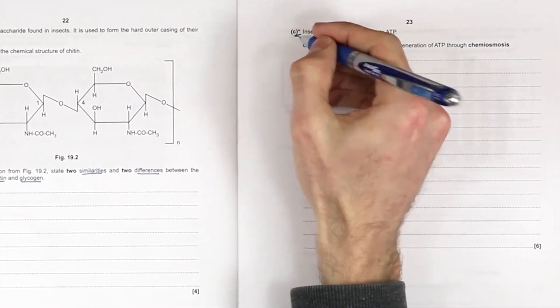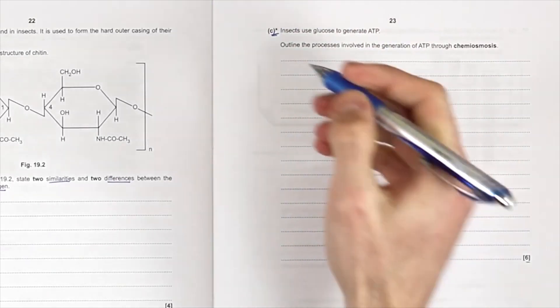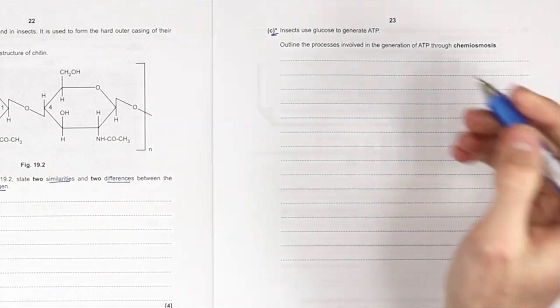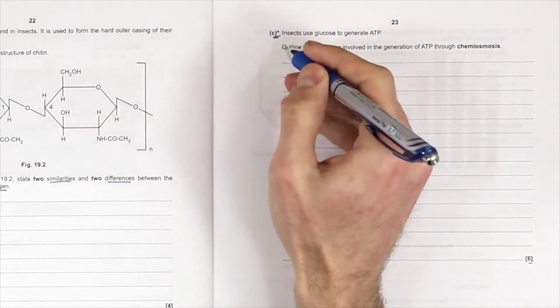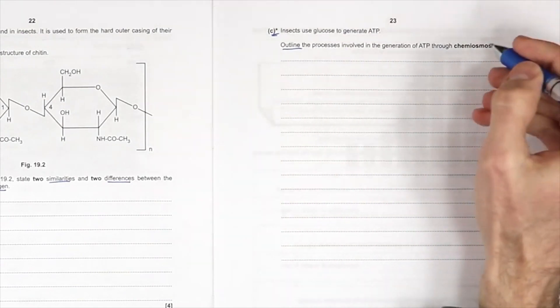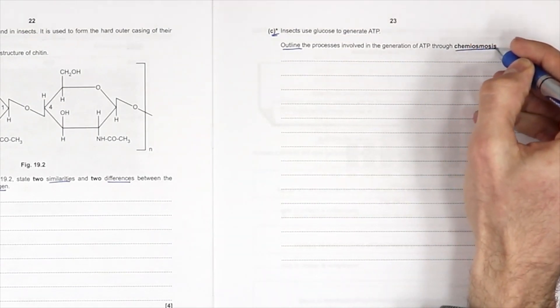We have the other, the second six mark question, the extended response with an asterisk. Insects use glucose to generate ATP. Outline the processes involved in the generation of ATP through chemiosmosis.